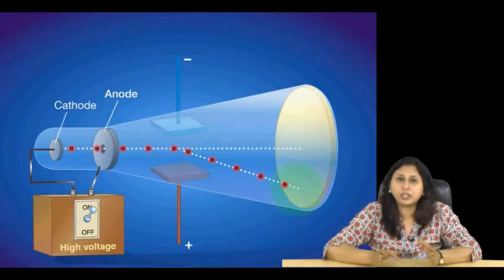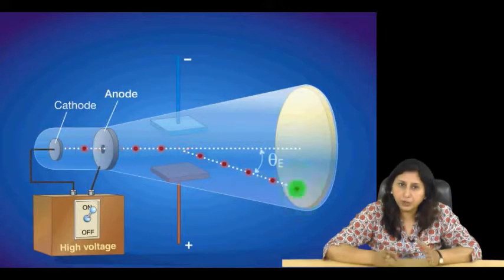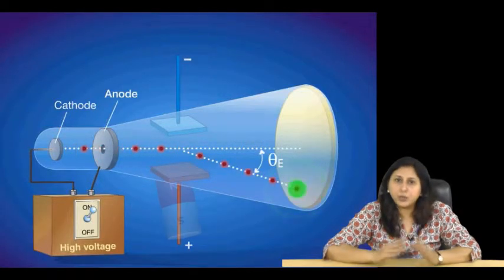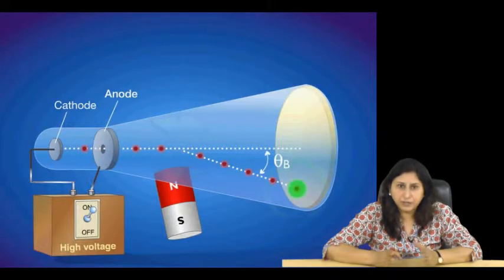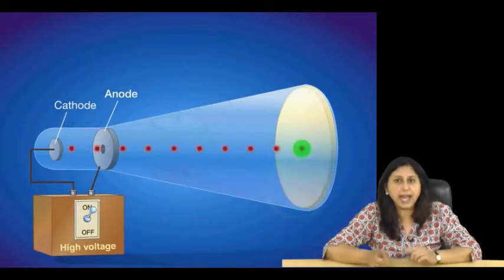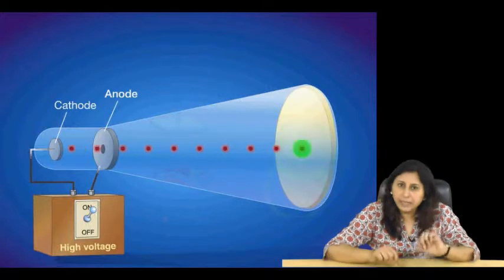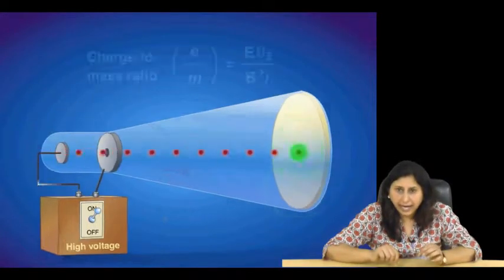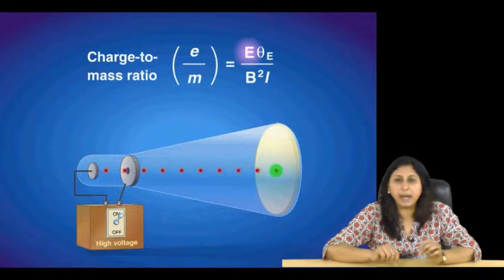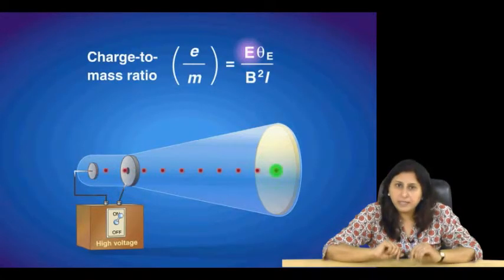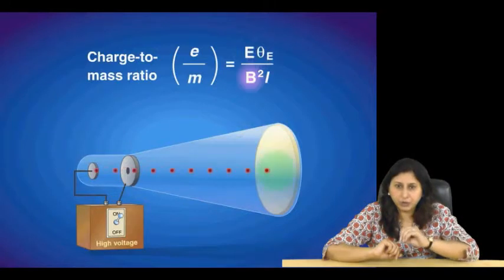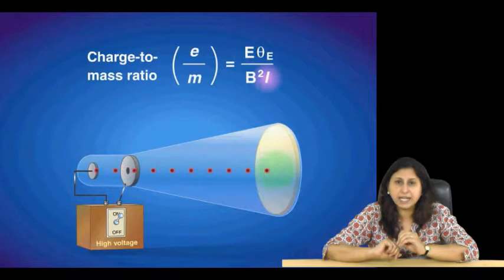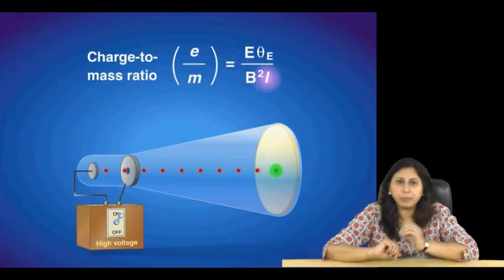He was able to calculate the charge to mass ratio of an electron using the following equation, where e is the applied electric field, theta is the angle of deflection, b is the applied magnetic field, and l is the distance travelled by the cathode rays. Thomson determined that the charge to mass ratio of an electron is negative 1.76 times 10 to the 8 coulomb per gram.